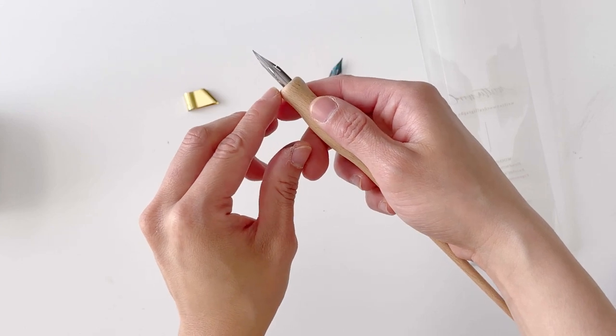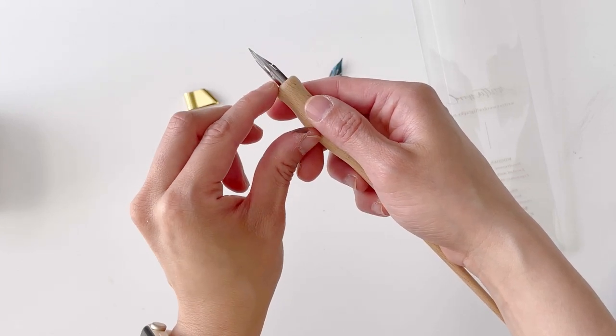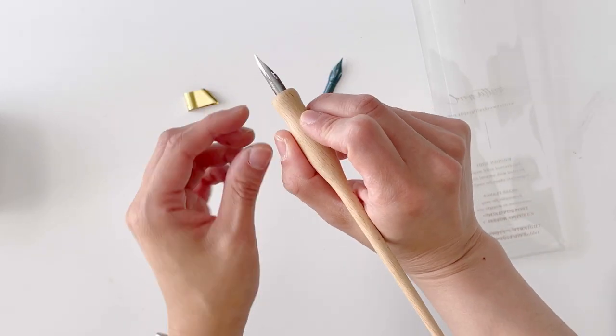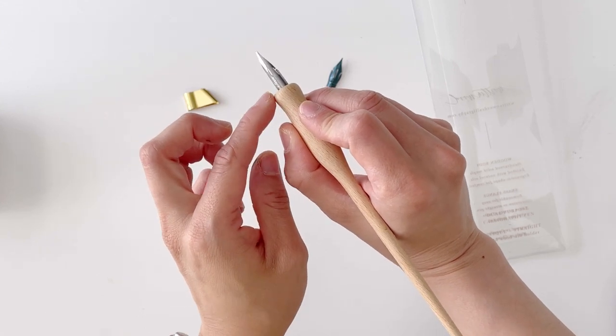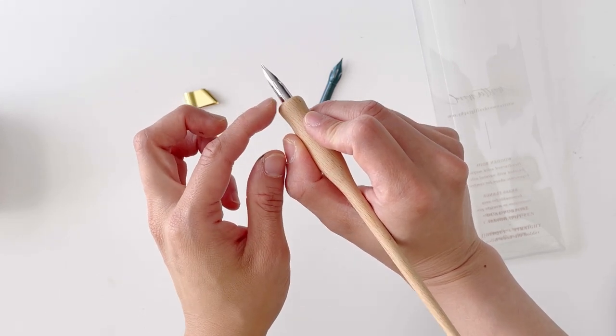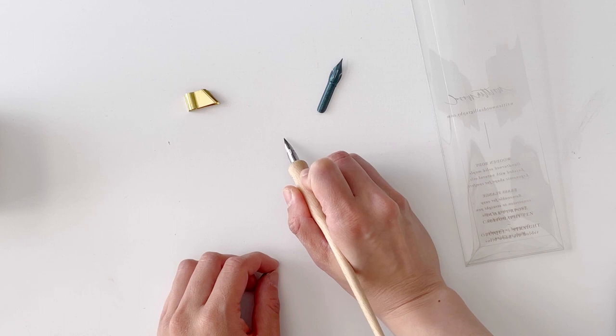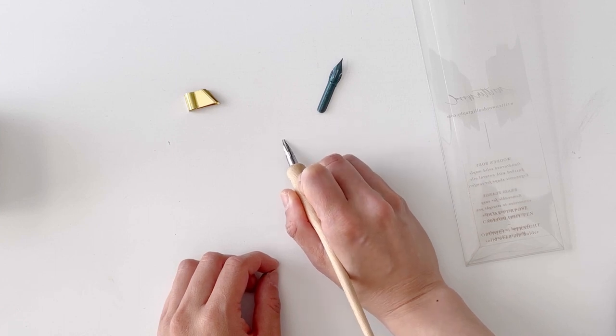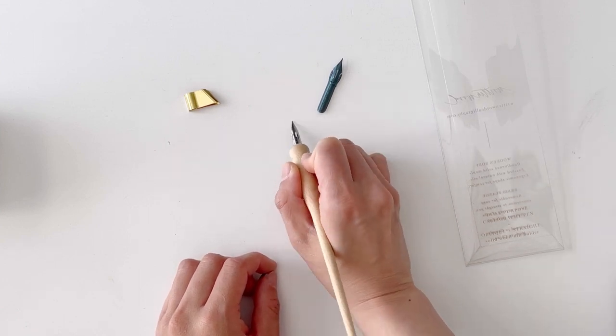Typically for the Nikko G at least, you'll still be able to see this G here. In terms of holding the pen, usually you'd want to keep about half an inch from the top of the pen and that way you'll have a lot of control in terms of creating the thin and thick lines of your calligraphy.